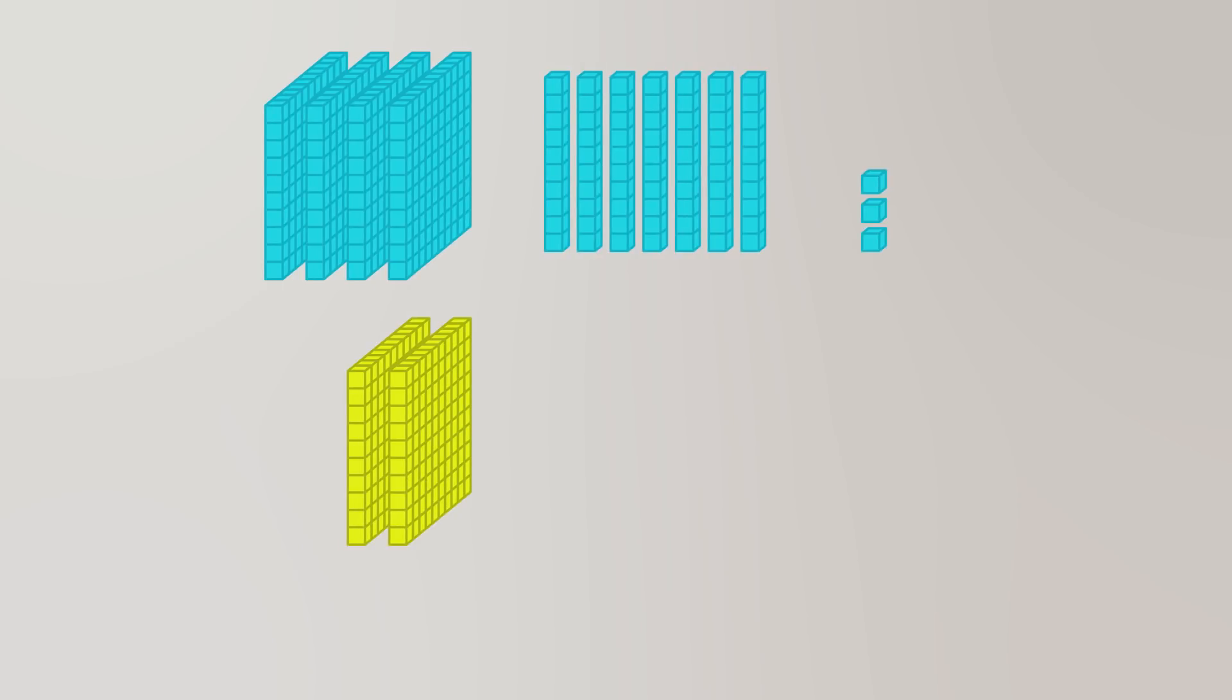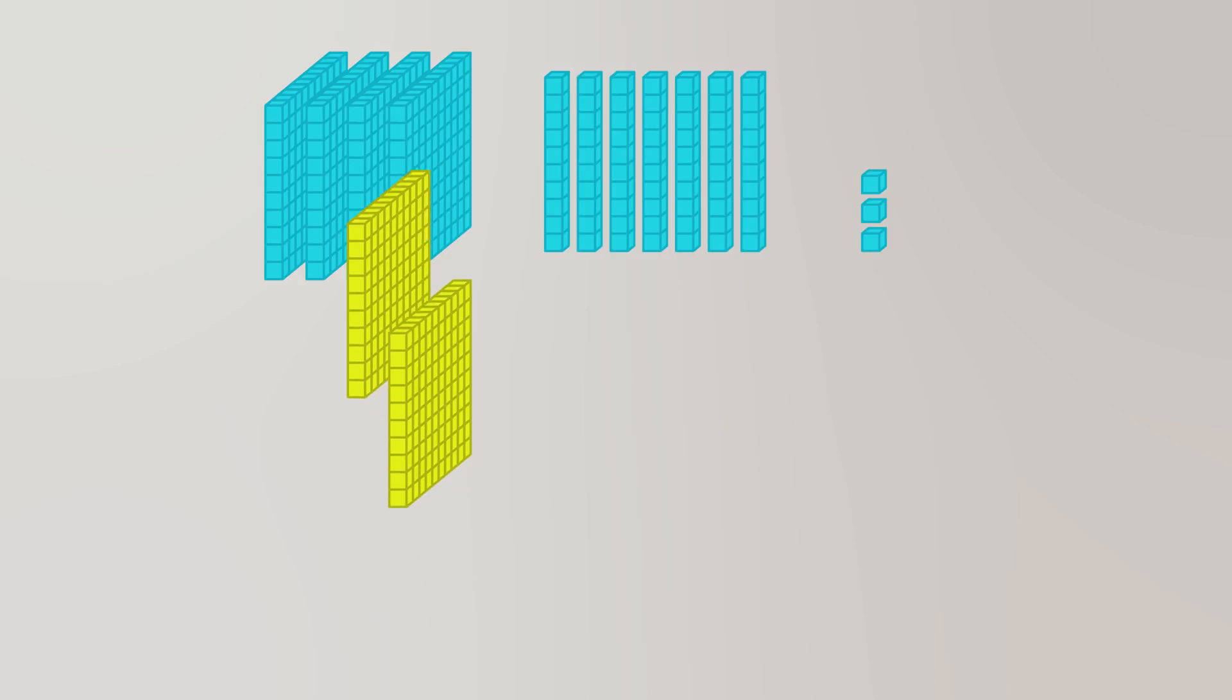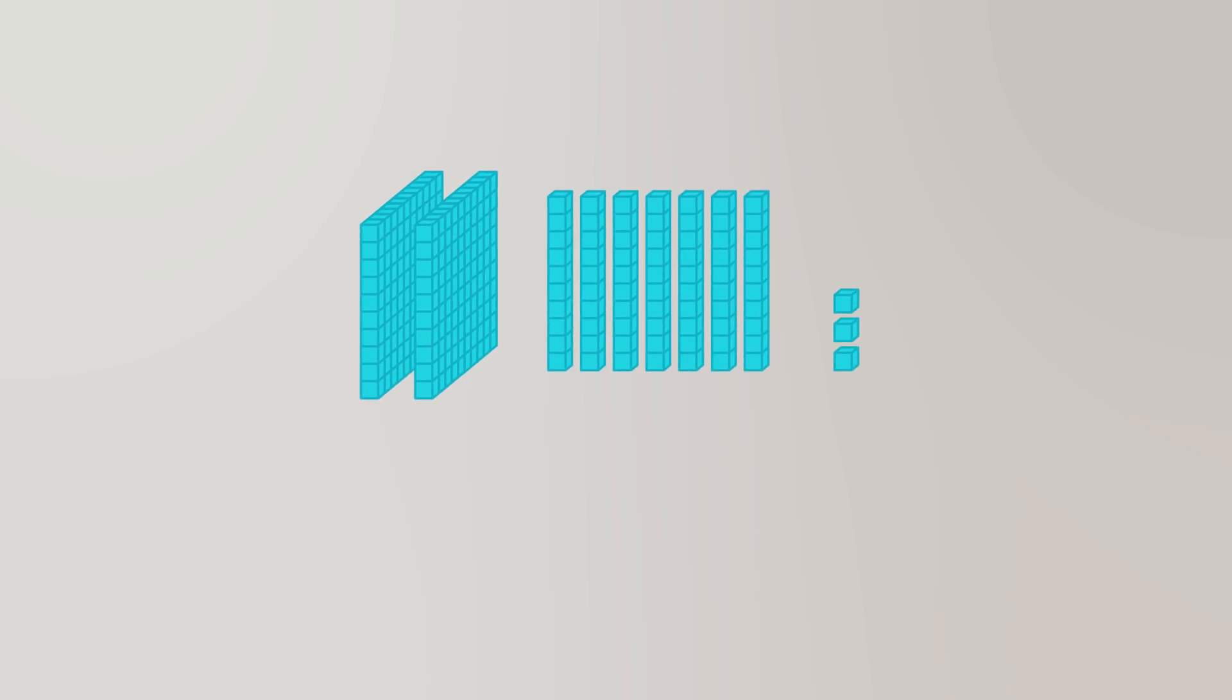Now we do this one last time with the hundreds blocks. We have 4, and we're subtracting away 2, leaving us with 2 hundreds. And so this is our final answer. We have 2 hundreds, 7 tens, and 3 ones. Or 273.